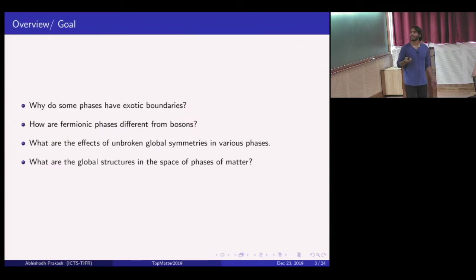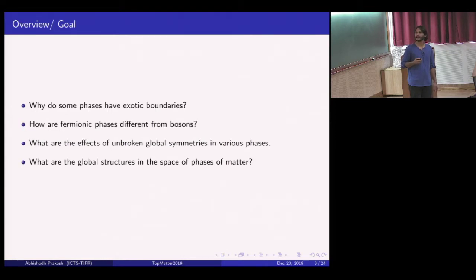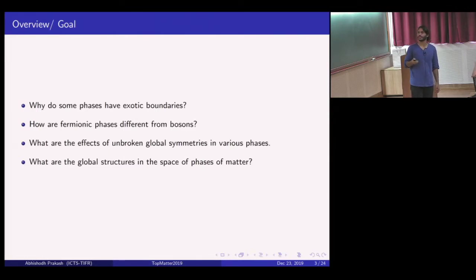Before I start my talk, I'd like to say a few words about what is motivating me to think about these things. A few questions I'm interested in are: why do some phases have exotic boundaries? What is exotic about exotic boundaries? How are fermionic phases different from bosonic ones? And what are the effects of unbroken global symmetries in various quantum phases?